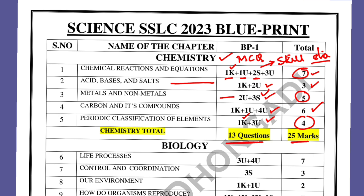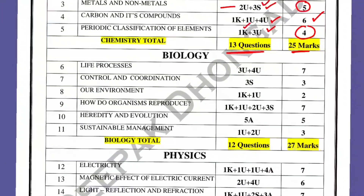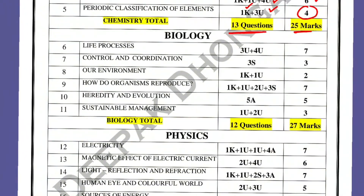Now moving on to the biology part. In biology, the first chapter is Life Processes: three mark question and four mark question — total seven marks. Control and Coordination: three marks, including a brain diagram. Our Environment: one knowledge-based question (one MCQ) and one understanding question — total two marks.